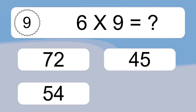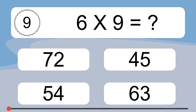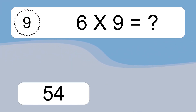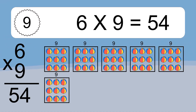6 times 9 equals what? We have 6 boxes, and each box has 9 colorful balls inside. 6 times 9 equals 54.